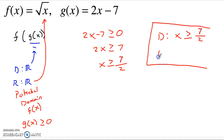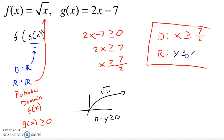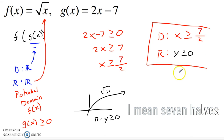Now for the range. The square root function graph starts at zero and goes up forever. Since we set x greater than or equal to 3 halves, g of x kicks out zero to f of x, and everything greater than zero up to infinity. The square root of x doesn't even realize anything happened — it only handles zero up to infinity anyway. So the range of this composition is y greater than or equal to zero. Final answer: domain x greater than or equal to 3 halves, range y greater than or equal to zero.